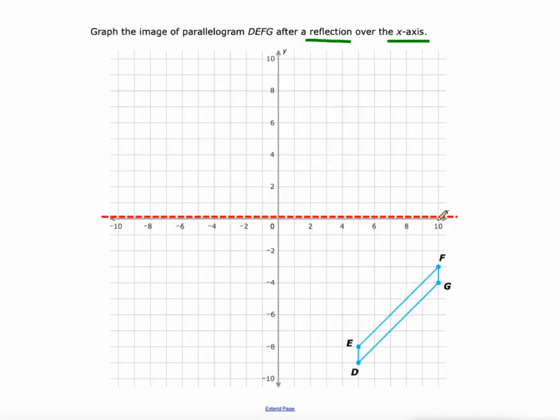For f, one, two, three, one, two, three. There's f prime. For g, one, two, three, four below x. One, two, three, four above x is where its new point would be. So there's g prime.